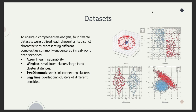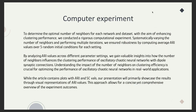In our work, we employed four distinct datasets: Atom, illustrating linear inseparability; Wingnut, demonstrating small intra-cluster and large inter-cluster distances; Two Diamonds, presenting weakly connected clusters; and NGTime, showing overlapping clusters of different densities. Our experiment aims to determine the ideal number of neighbors for various network and dataset types to optimize clustering. By systematically adjusting neighbor counts across iterative clustering runs, we assess their impact on clustering quality, averaging metrics over multiple initial conditions for more reliable results.